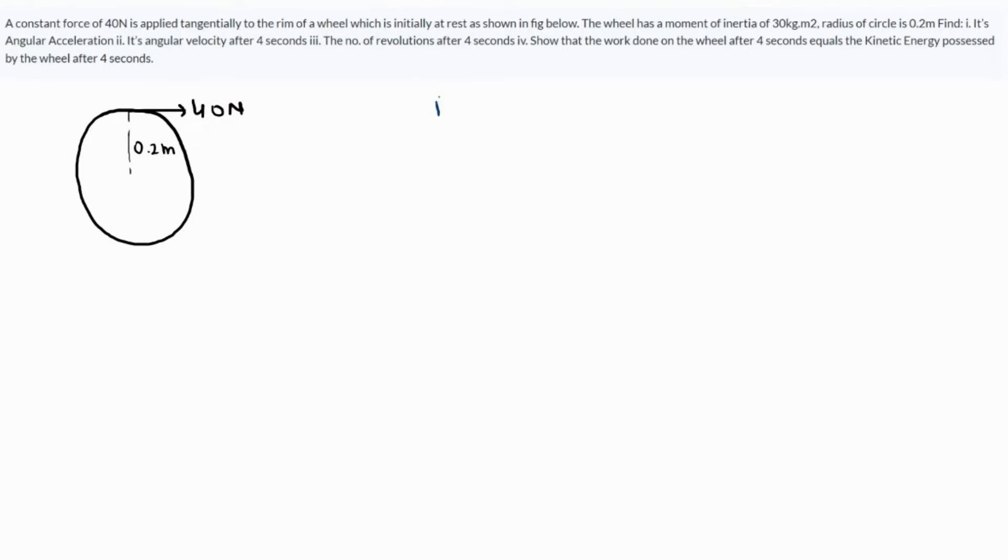First part, we have to find angular acceleration. Pretty straightforward because torque is τ = Iα, right? And what is torque? Torque is r × F = Iα. Now since the force is tangential, it moves about an axis passing through its center. The distance from the center is the radius, and the angle is 90 degrees because the tangent is perpendicular to the radius. So r × F means rF sin θ = Iα.